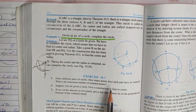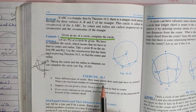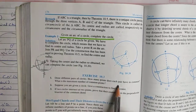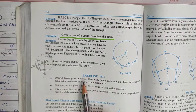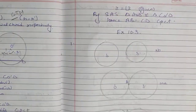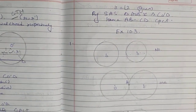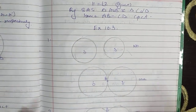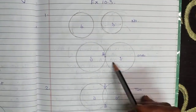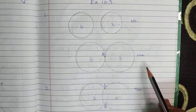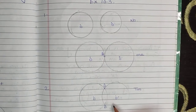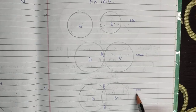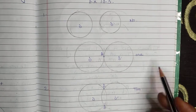Now come to Exercise 10.3 Question 1: draw different pairs of circles and find how many points each pair has in common, and what is the maximum number of common points. One case is when they don't touch at all — no common point. Another case is when they touch at exactly one point — answer is 1. Another case is when they intersect at 2 points — so the maximum is 2 points.